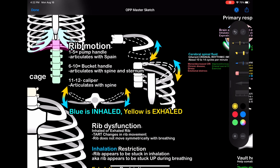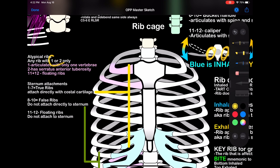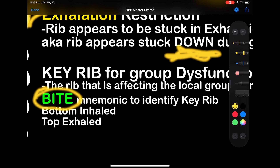Rib motion — very important. Three different types of rib motion, all having to do with where the axis is. Ribs 1 through 5: pump handle — that's where it rotates from. Ribs 6 through 10: bucket handle — with axes there, it moves up and down like a bucket handle. Ribs 11 to 12: caliper — one axis, and it moves in and out. How do you name ribs? Atypical ribs are any rib with a 1 or a 2: so 1, 2, 11, and 12 are atypical. Rib dysfunction — inhaled ribs versus exhaled ribs. Inhaled means it's stuck in inhalation or stuck up. Exhaled means it's stuck down. Bottom inhaled, top exhaled — that's for the key rib. The key rib is the one you treat.